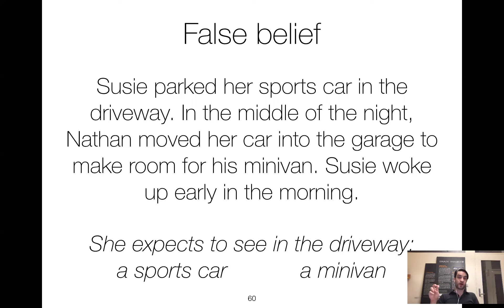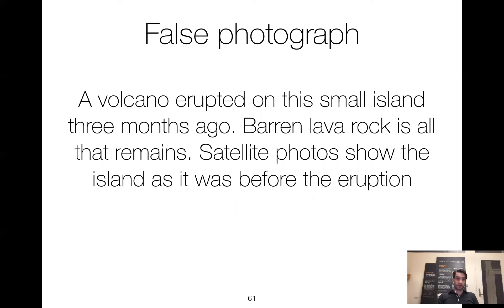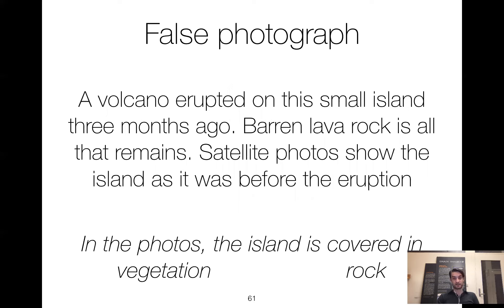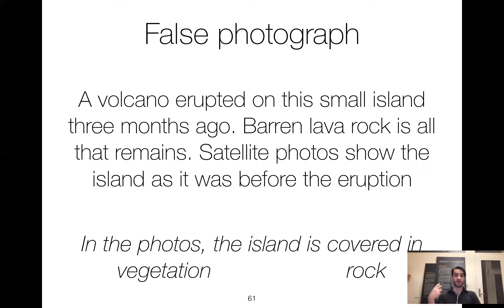There are also things referred to as false photograph stories. Here's an example: 'A volcano erupted on this small island three months ago. Barren lava rock is all that remains. Satellite photos, however, show the island as it was before the eruption. In this photo, the island is covered in vegetation or rock.' We would say vegetation. Again, there's something that has changed. This matches the false belief scenarios in many ways, except there wasn't an agent involved — no person with a mind making decisions.